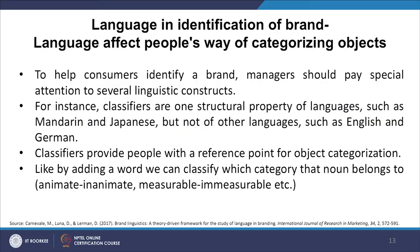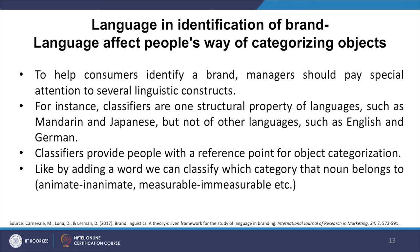To help consumers identify a brand, managers should pay special attention to several linguistic constructs. Classifiers are one structural property of languages such as Mandarin and Japanese, but not of English or German. Classifiers distinguish words — for example, animate from inanimate, or measurable from immeasurable. Chinese speakers are more likely to perceive two distinct objects as similar if they share a classifier. From a managerial view, this has important consequences for brand positioning and retail layout strategies — Chinese department stores often group together objects sharing the same classifier, such as scarves.